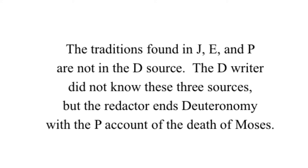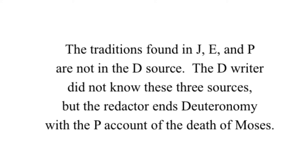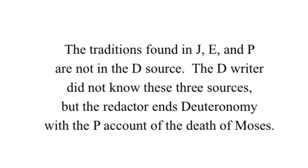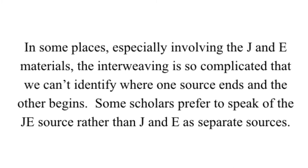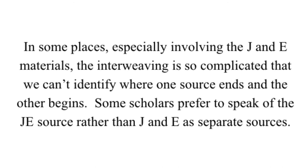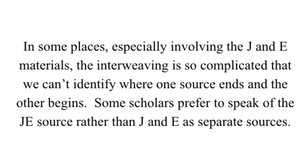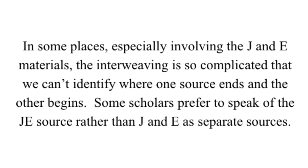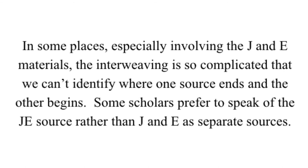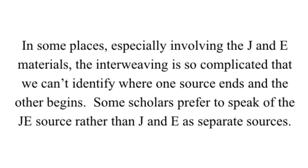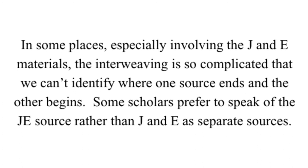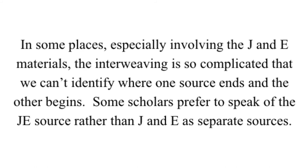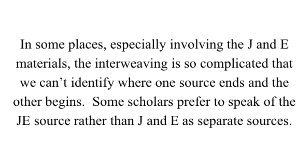The D writer did not know these three sources, but the redactor ends Deuteronomy with the P account of the death of Moses. In some places, especially involving the J and E materials, the interweaving is so complicated that we can't identify where one source ends and the other begins. Some scholars therefore prefer to speak of the JE source, rather than J and E as separate sources.